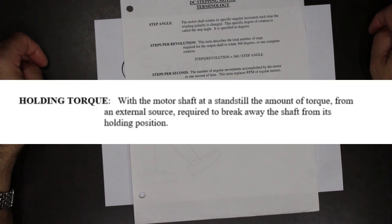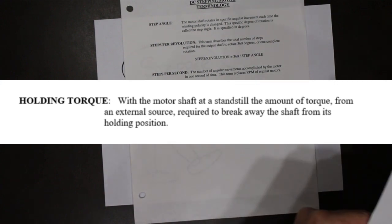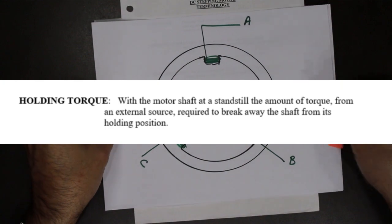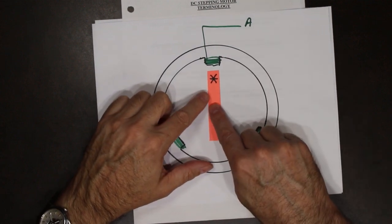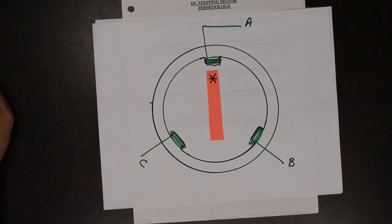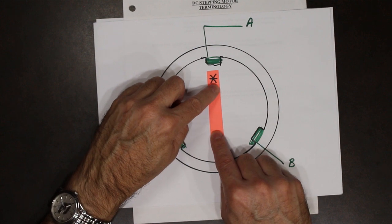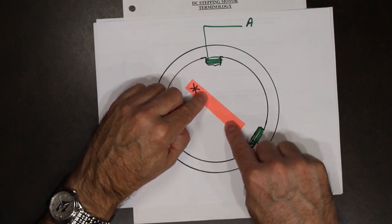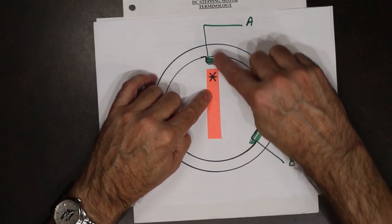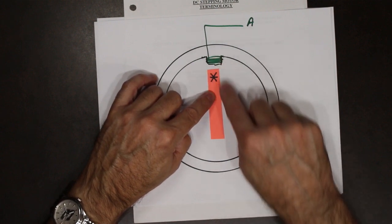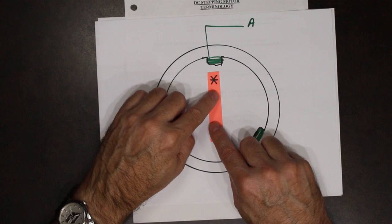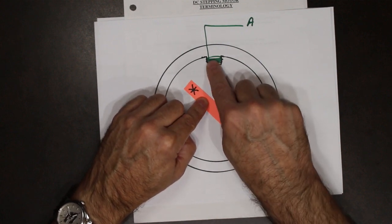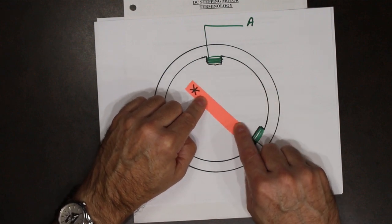The next term is holding torque. With the rotor at a standstill and the pole still energized, how much torque is required to break it free? If I energize pole A and lock the rotor into that position, the pole becomes a magnet and the rotor is attracted to it. How much force would I have to put on the rotor to actually overpower that magnetic field? That's what's called holding torque.